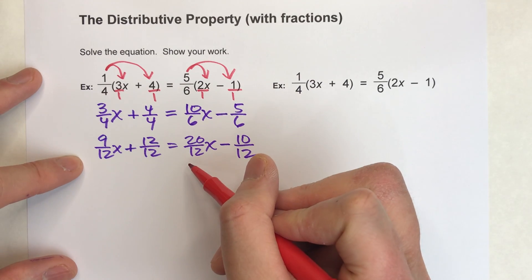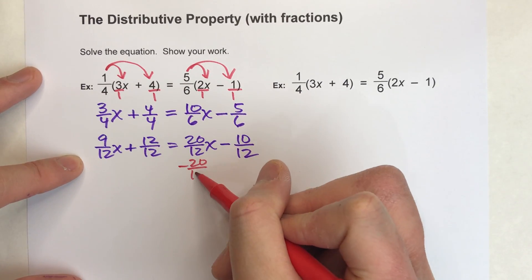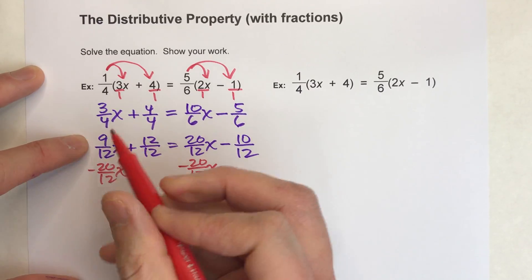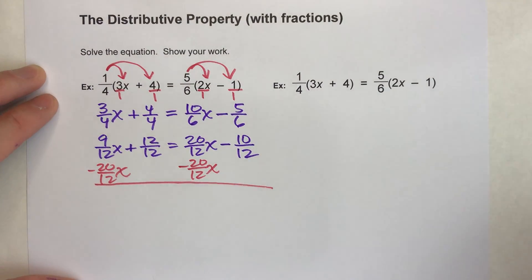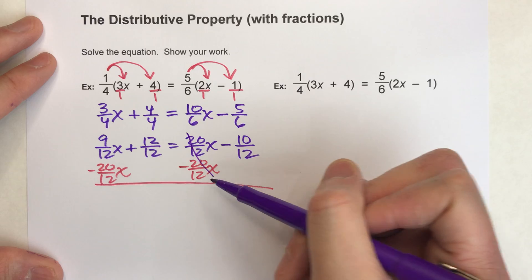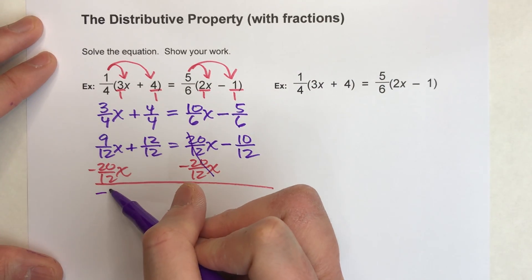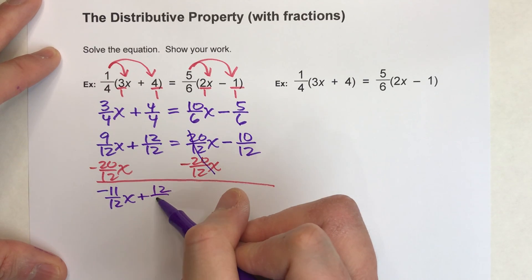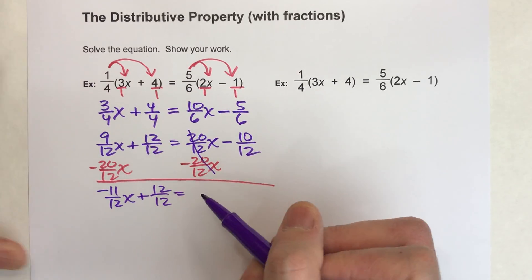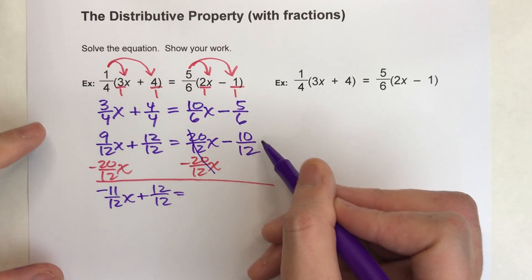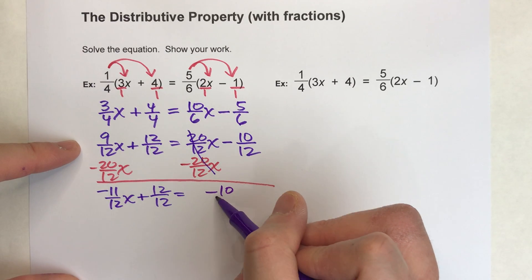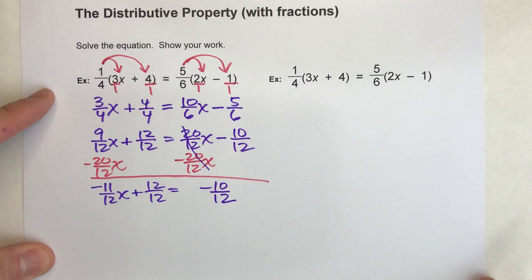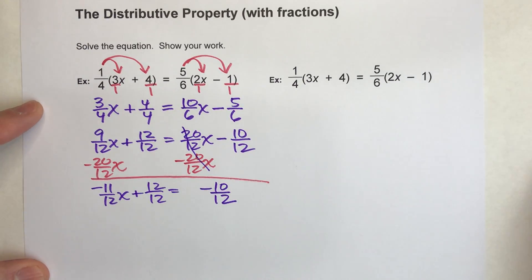Okay, so let's do this. I've got x's on both sides, I'm going to subtract 20/12 on both sides. You could also subtract 9/12 from both sides if you wanted to. I'm just going to keep the x on the left side. When I do this, these undo each other, I get -11/12x over here. The plus 12/12 just drops down, my equals drops down. And then this -10/12 is going to drop down as well. Notice that minus sign's attached, so it's staying with the 10/12.